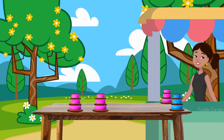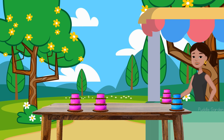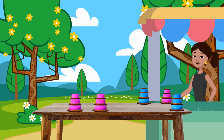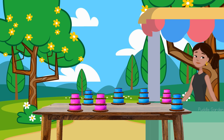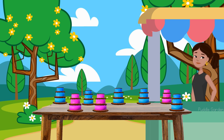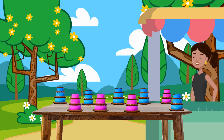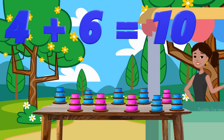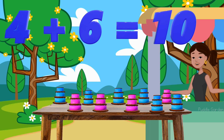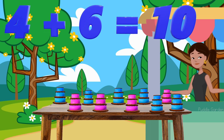Now we're left with four and we need to bake up to 10. So let's start from four: five, six, seven, eight, nine, and 10. That was six cakes, and now we're back up to 10.